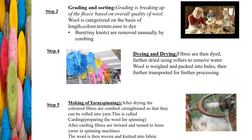The wool is then weighed and packed into bales, which are transported to mills for further processing. Step 5 is making yarn, or spinning. After drying, the colored fibers are combed and straightened so they can be rolled into yarn — this is called carding, which is preparing the wool for spinning. After carding, fibers are twisted and turned to form yarns in spinning machines. The wool is then woven and knitted into fabric.